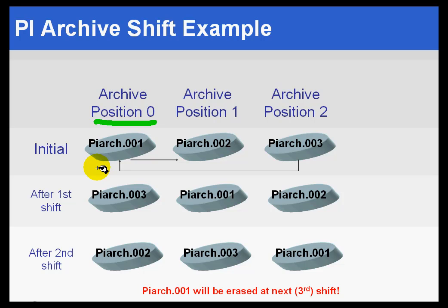What we're going to do is look for the highest shiftable archive. The highest shiftable archive is either going to be an empty archive, or it's going to be the oldest archive if there are no empty archives. Basically, you can quote this: if it exists, an empty archive will be selected to be the new primary. If no empty archive exists, then the oldest archive will become the primary, and its existing data will be overwritten.